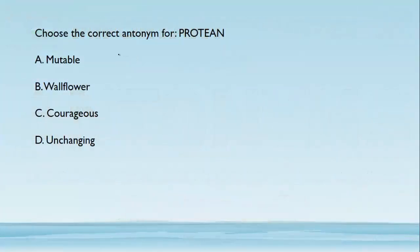The first question: choose the correct antonym for 'protean.' The word protean means someone or something which changes frequently, which varies and keeps changing. The correct antonym for this word is 'unchanging.'